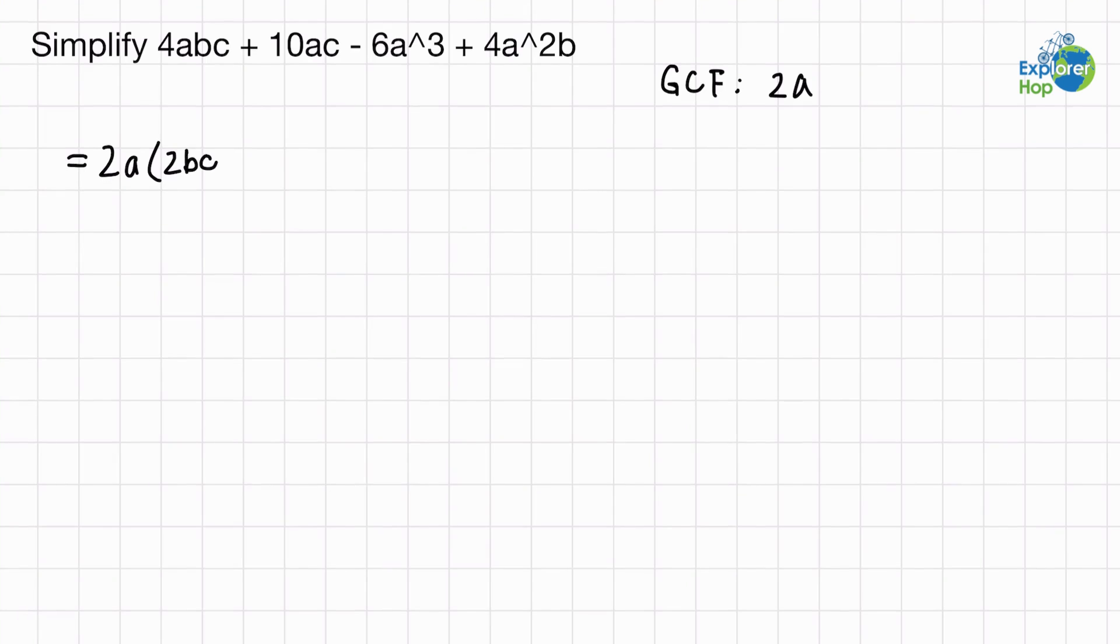10 divided by 2 equals 5, a divided by a cancels out, and we're left with 5c. Negative 6 divided by 2 equals negative 3. Make sure you include the signs when you're dividing. And a cubed divided by a to the power of 1 will give us a squared, if we remember our law of indices.